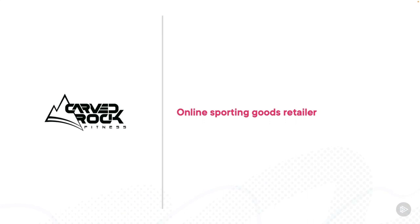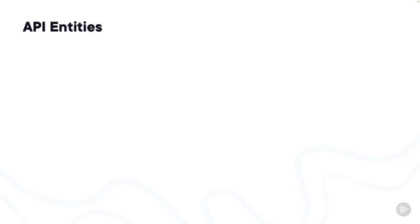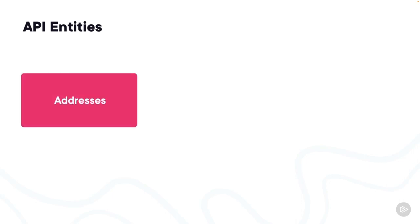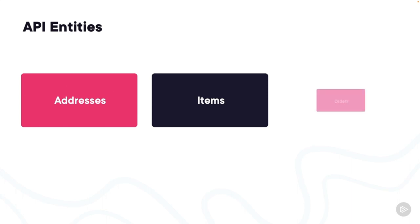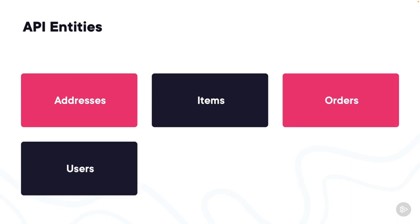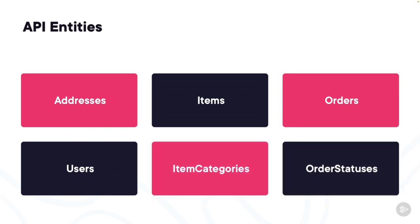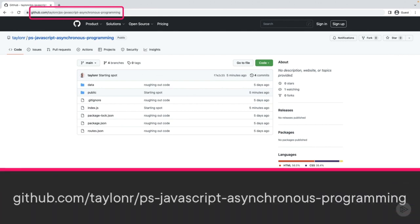For this course we'll be accessing an API used by Carb Rock Fitness, an online sporting goods retailer. Their API allows them to create, track, and ship orders out to their customers. Their API consists of a few key objects: addresses, products or items, orders, users, as well as metadata entries such as item categories and order statuses. Using these entities we'll be able to check on the status of an order or determine where the order has been shipped. To run the API, we first need to get the code by cloning the GitHub repo.